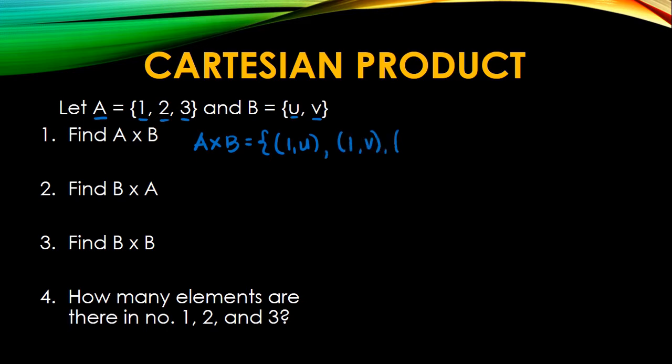Next, we have 2U and 2V. So each element in the ordered pair in the set is separated by a comma. So last, we have 3U and 3V. So this is the answer for A cross B.